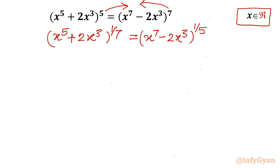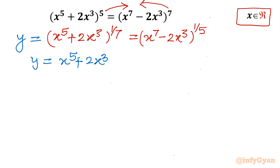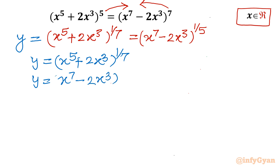Now I will use substitution. Let us consider this common equality equal to y. So I will frame two equations: y = (x⁵ + 2x³)^(1/7), and y = (x⁷ - 2x³)^(1/5).